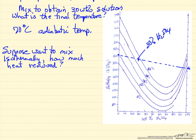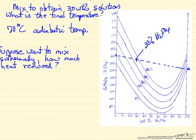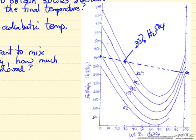The other question we could ask is, suppose we wanted to mix them isothermally, how much heat would we need to remove from the mixture per kilogram of mixture? This means our final enthalpy if we mix them adiabatically, we can read about 380 kilojoules per kilogram of mixture.